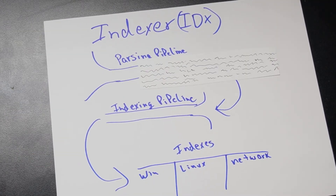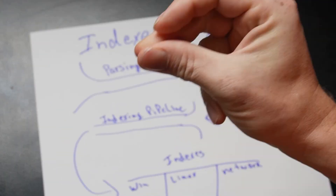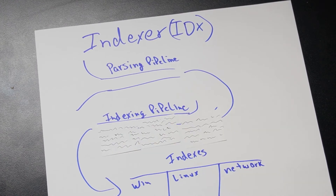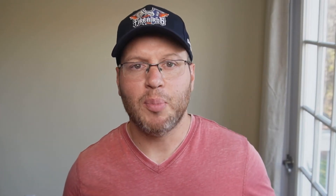It's also here at the indexers that bulk raw data is properly segmented into separate events. An important note: the universal forwarder and the heavy forwarder components do some preprocessing on data sent to the indexers. This helps to distribute the workload — again, a big reason why Splunk can scale so well.